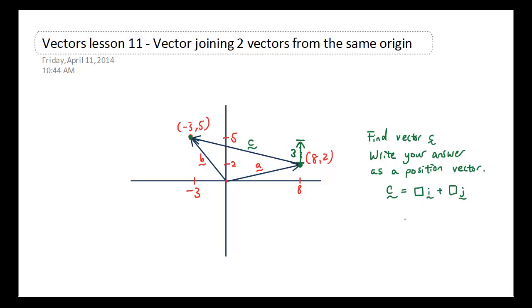So vector C is going to be 3 units in the y axis. And we're going from this point to this point, we're going to the left, by 8 plus 3, which is 11 units to the left. So negative 11.